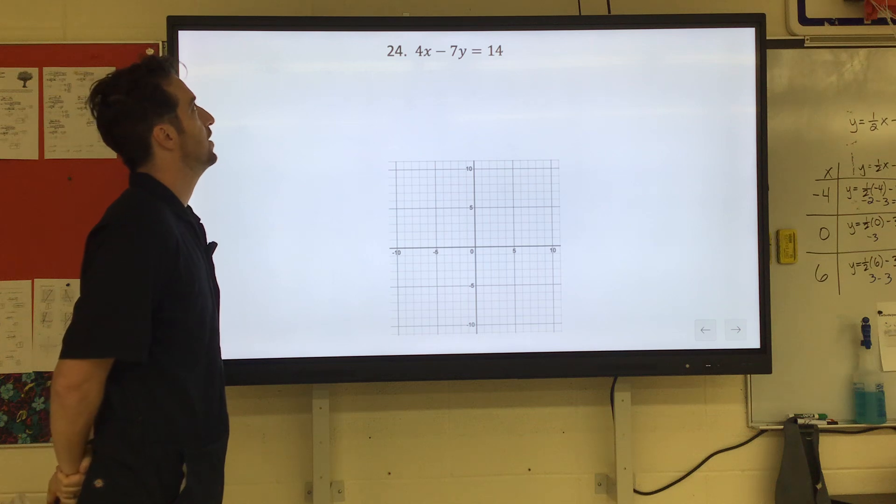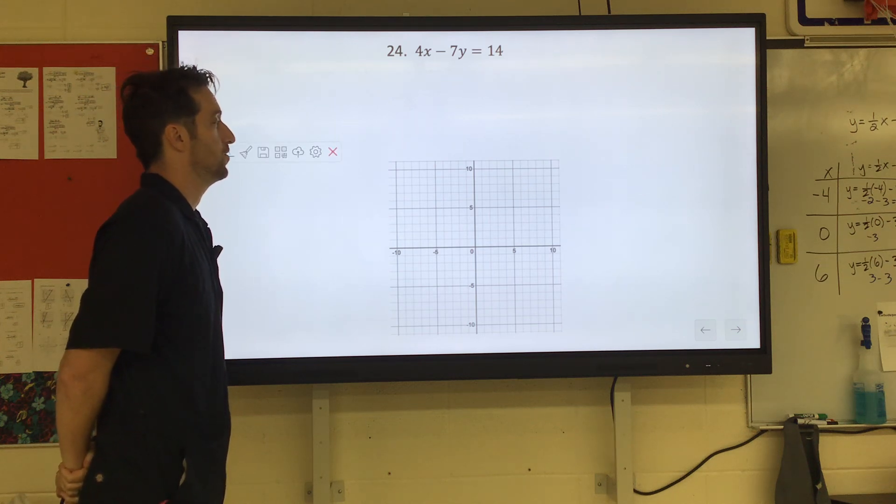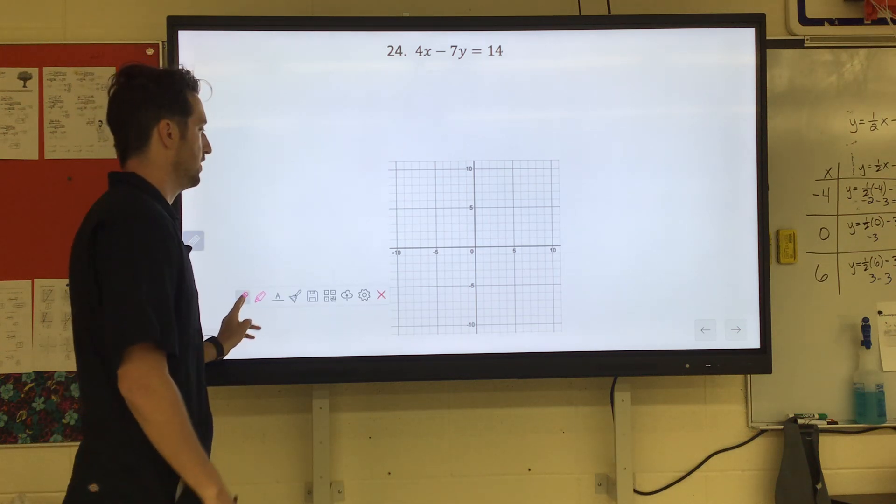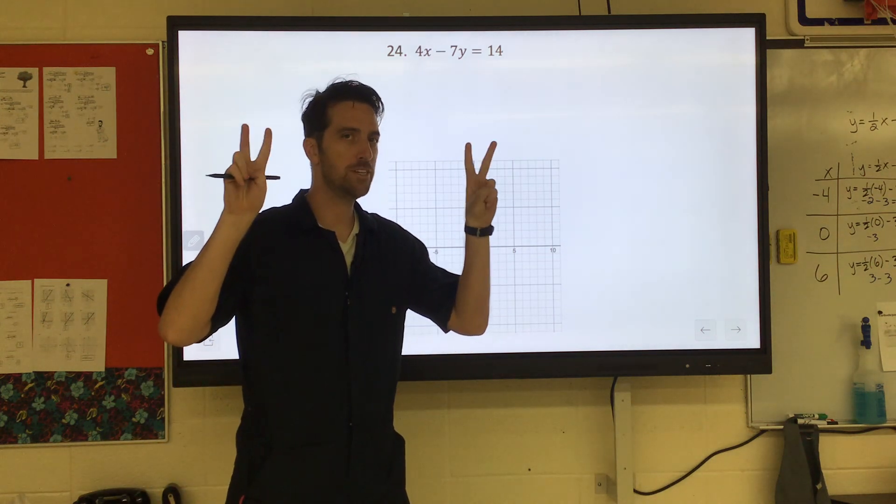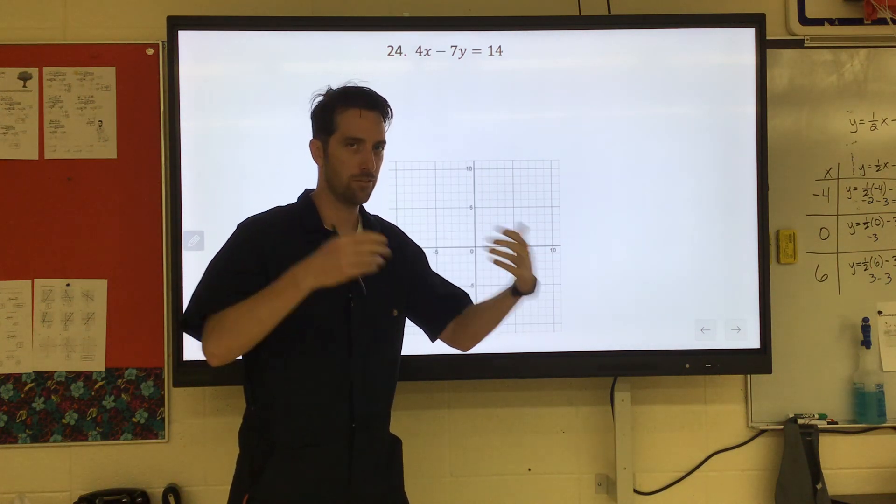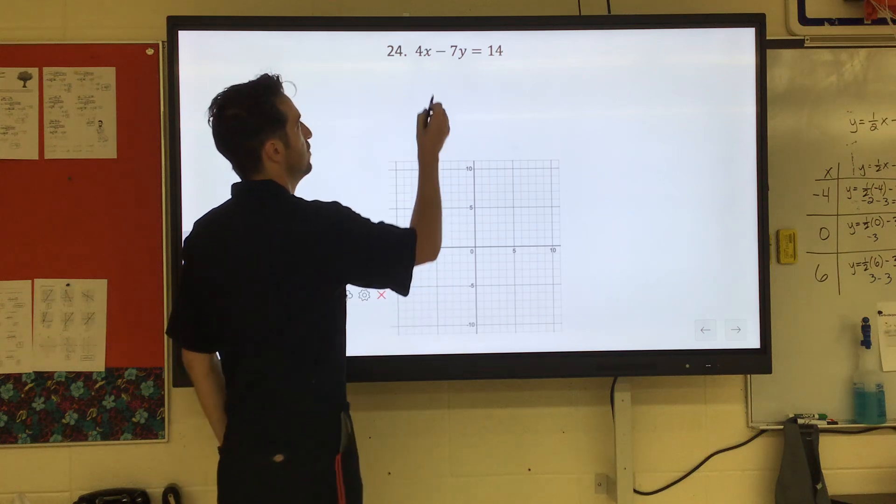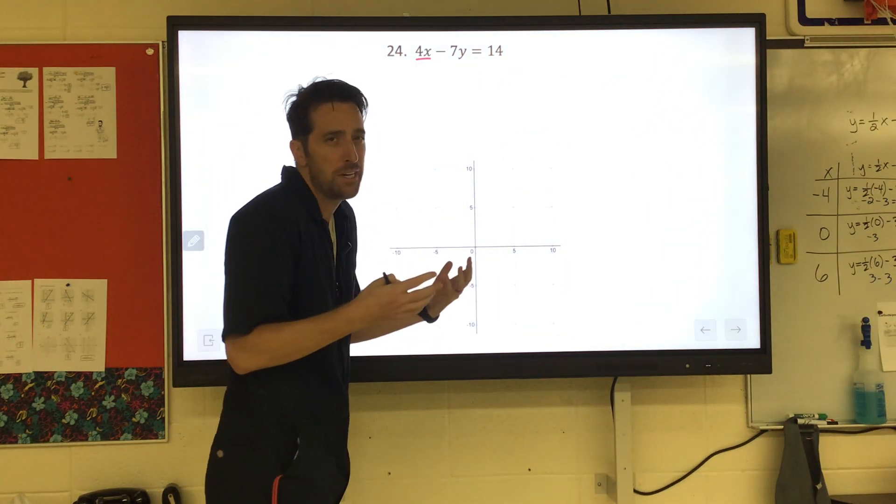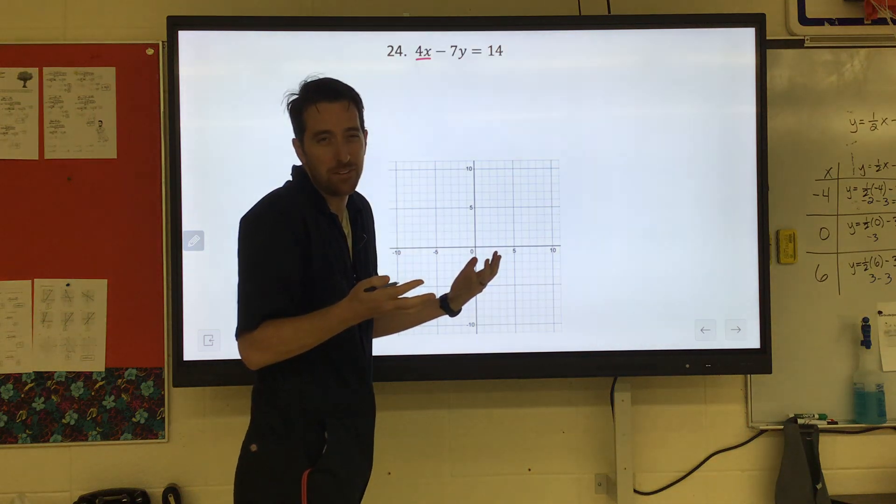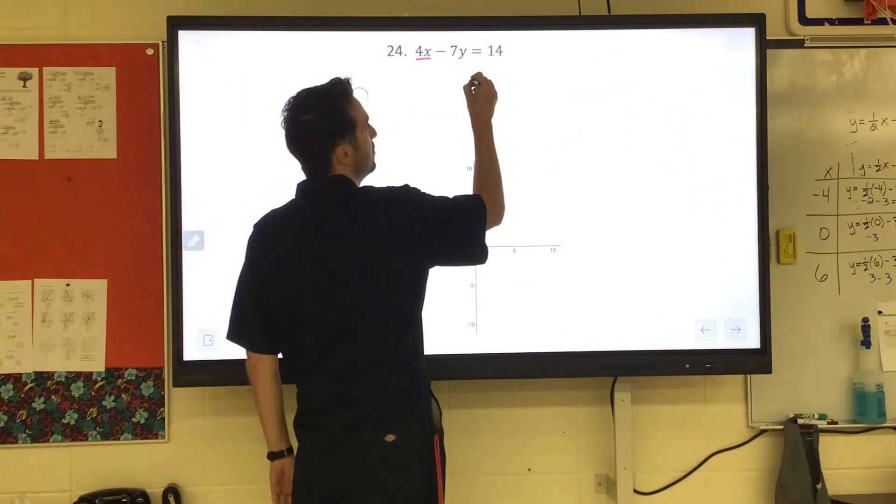4x minus 7y equals 14. So when we're solving problems like this, remember the steps in a textbook would say substitute in 0 for x and solve for y. But if I substitute in 0 for x, it'd be 4 times 0, which is 0, so it just goes away. So just write the equation without the x's. We have negative 7y.